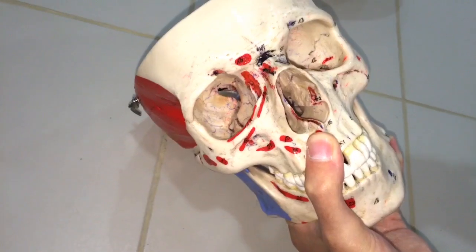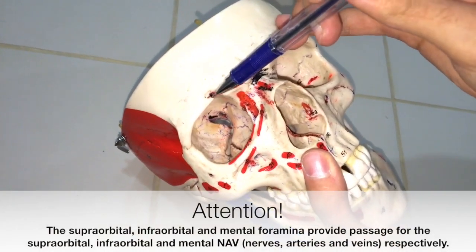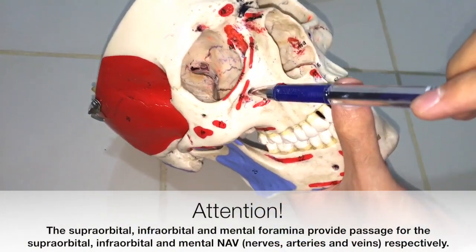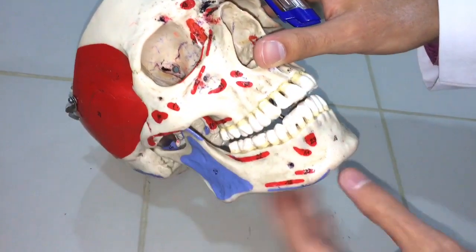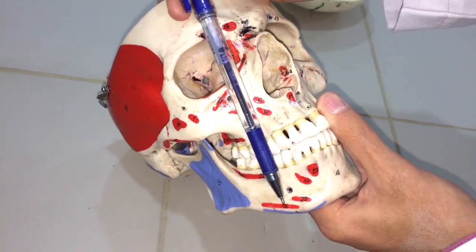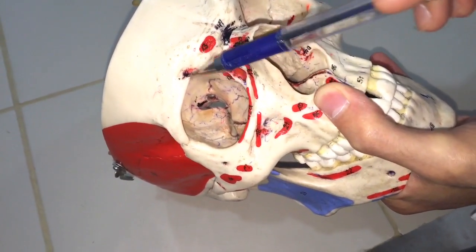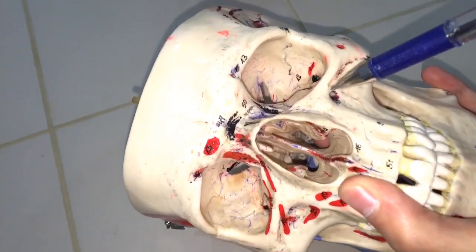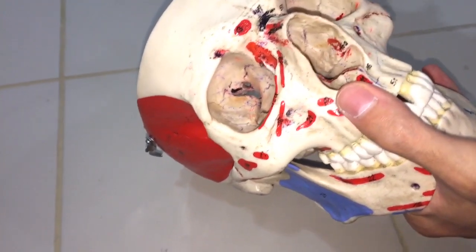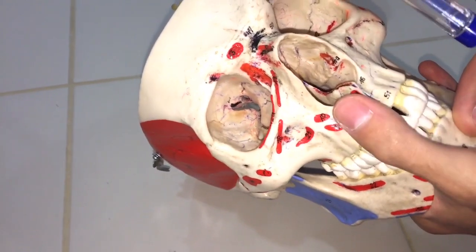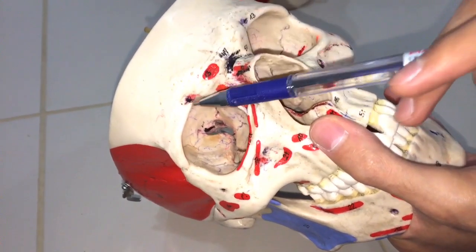It is important to know that only the posterior nasal aperture is called choanae; the anterior nasal aperture is called the piriform aperture. Talking about some foramina in the skull: this is the supraorbital notch leading to the supraorbital foramen, this is the infraorbital foramen, and this is the mental foramen. We can notice that these three foramina are on the same vertical line. Sometimes the supraorbital opening comes in the form of a notch and sometimes as a foramen.